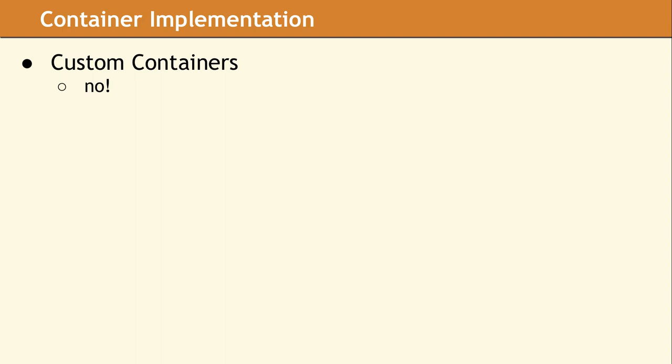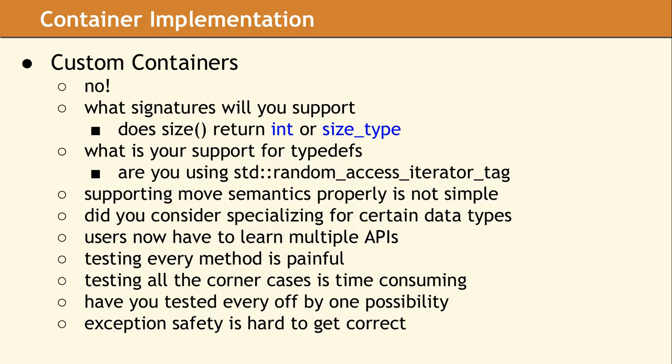So given all of this, should you write your own containers? This is almost never a good idea. If you think you need a custom container, here is a partial list of what you need to consider that the STL containers already provide for you. Do your containers support move semantics properly? If you are not using std::move_if_noexcept, you might have a bug. Users also now have to learn your API in addition to the STL container API. Writing iterators can be tricky — it is very easy to be off by one in your reverse iterator while being correct in the forward iterators.